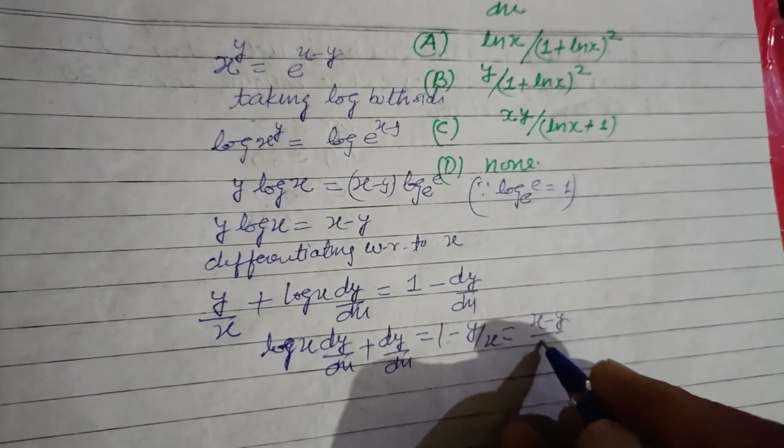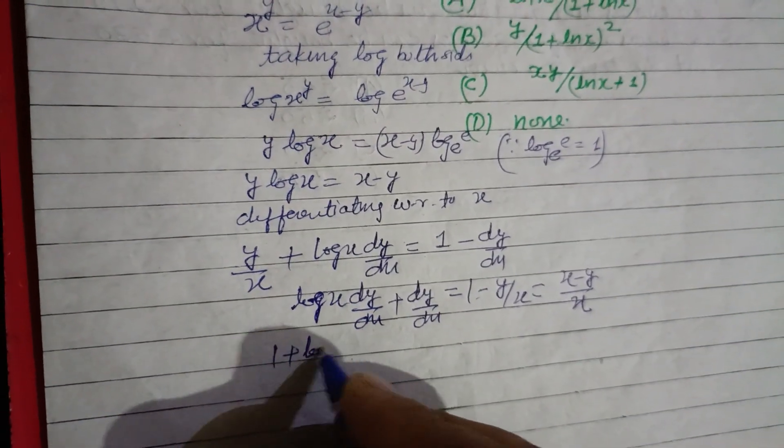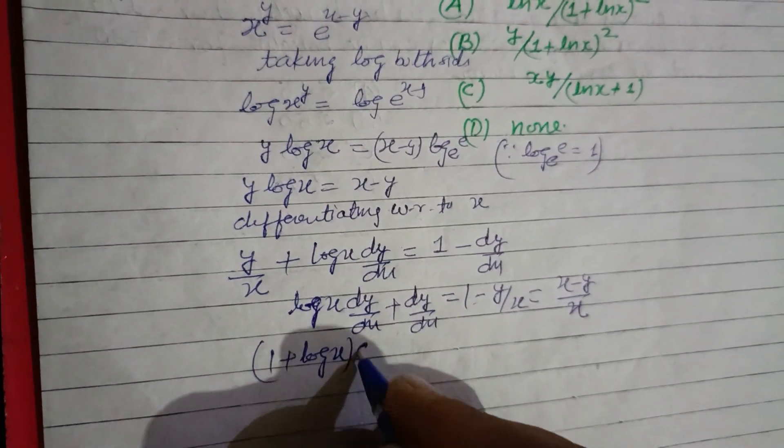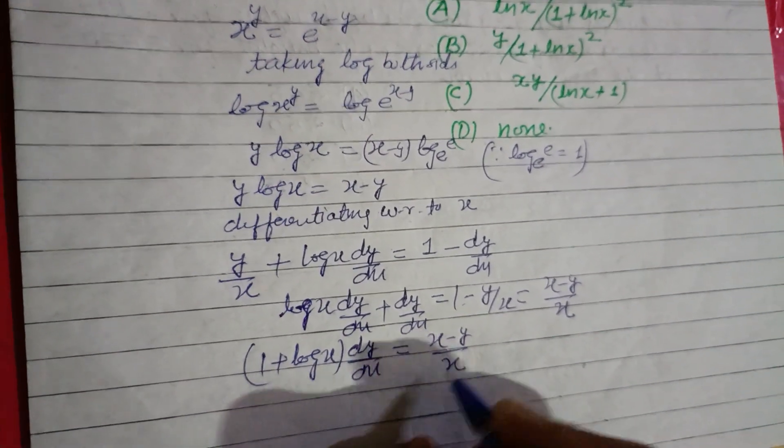Log x dy by dx plus dy by dx equal to 1 minus y over x, which we write as x minus y over x. From here dy by dx is common, so 1 plus log x times dy by dx equals x minus y over x.